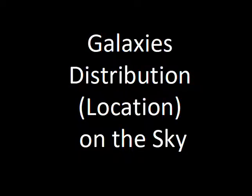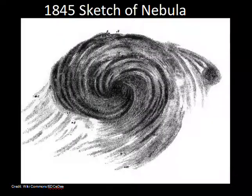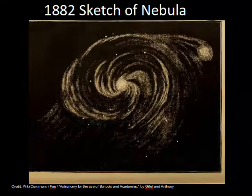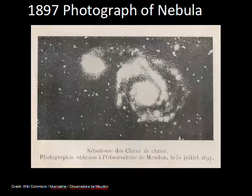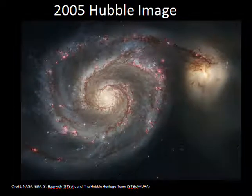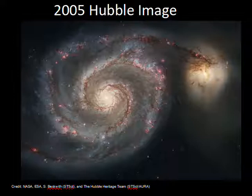This video will briefly discuss how galaxies are distributed across the sky — where they're located on the sky. As astronomers started studying the sky and had access to better and better telescopes, they started to see these nebulas, especially the spiral nebulas, were an important class. Photography improved the situation a lot and helped more detailed scientific studies of where galaxies are distributed across the sky.